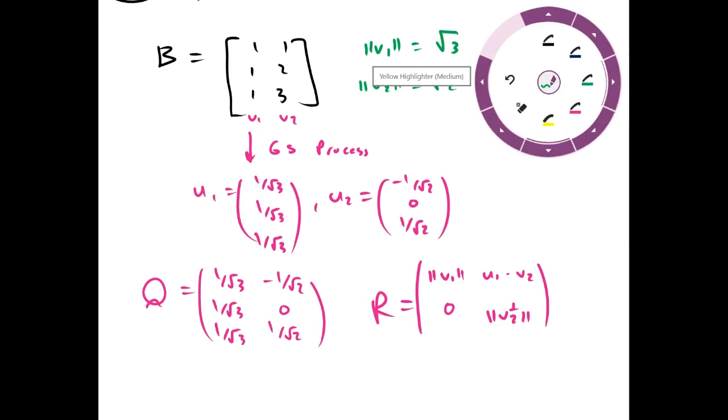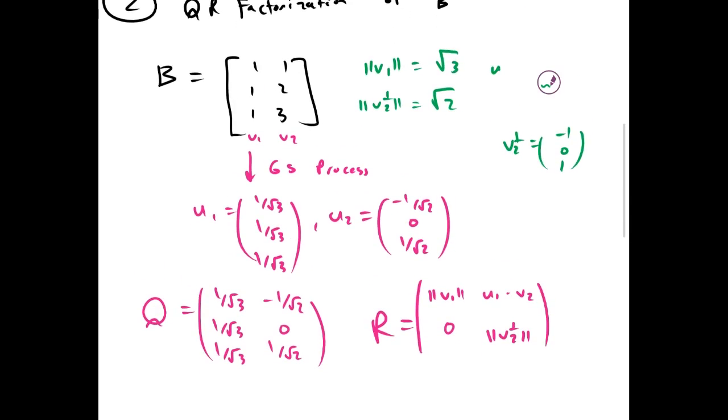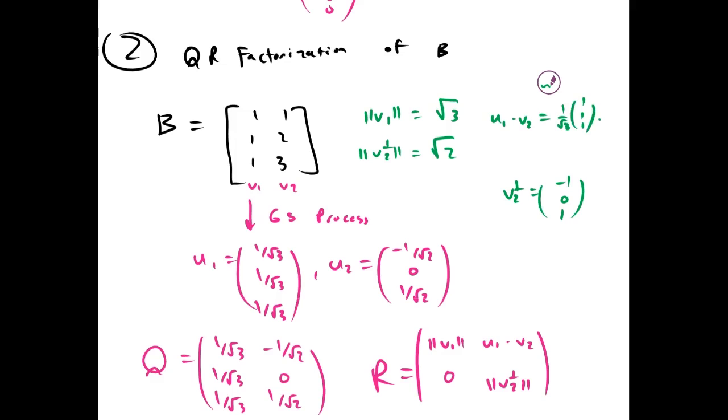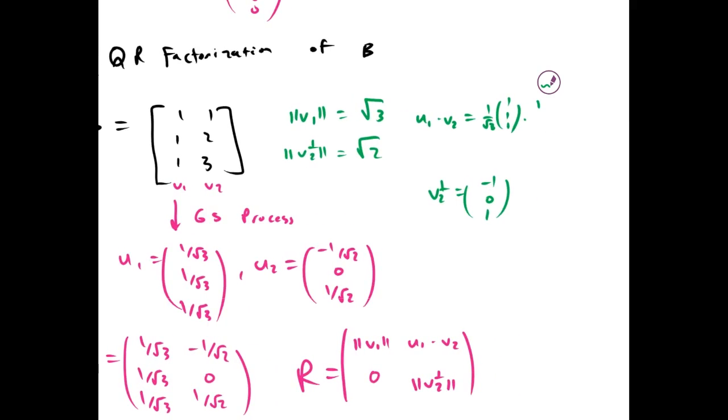And U1 dot V2 is 1 over root 3 times 1, 1, 1 dotted with 1, 2, 3, which was 1 over root 3 times 1 plus 2 plus 3, which is 6 over root 3.